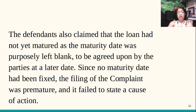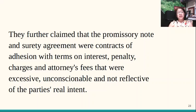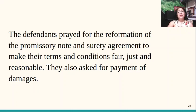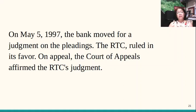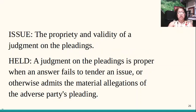The defendants added that the promissory note did not provide a due date for payment, claiming the loan had not yet matured because the maturity date was purposely left blank to be agreed upon by the parties at a later date. Since there was no maturity date, they argued the filing of the complaint was premature and failed to state a cause of action. However, in obligations and contracts, when there is a demand, that in effect fixes the date on which the obligation becomes due and demandable. The defendants further claimed that the promissory note and surety agreements were contracts of adhesion with terms on interest, penalty, charges, and attorney's fees that were excessive, unconscionable, and not reflective of the parties' real intent. They prayed for reformation of the documents and payment of damages by way of a counterclaim. The bank moved for judgment on the pleadings on May 5, 1997, and the RTC ruled in its favor. On appeal, the Court of Appeals affirmed. The issue was the propriety and validity of a judgment on the pleadings.